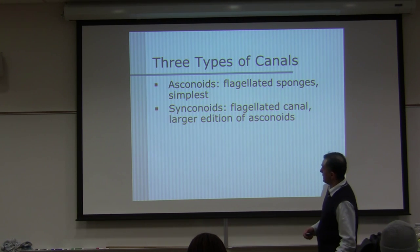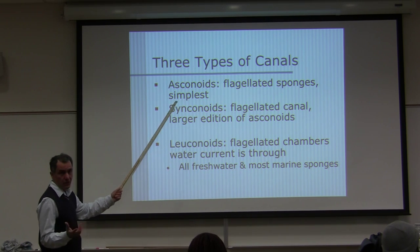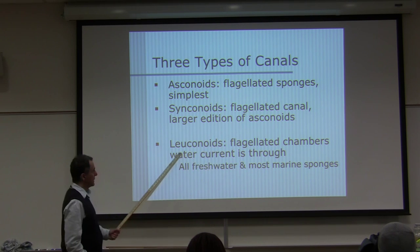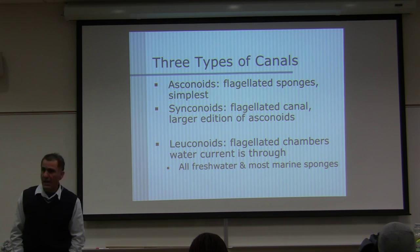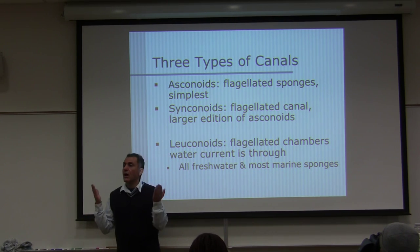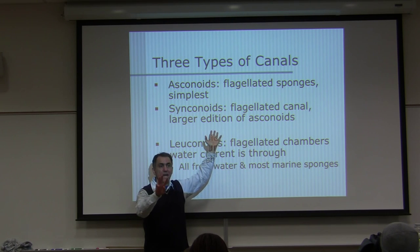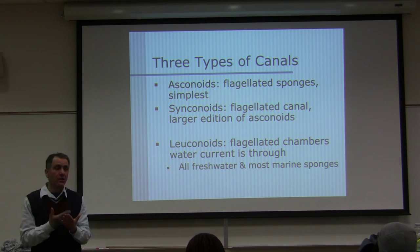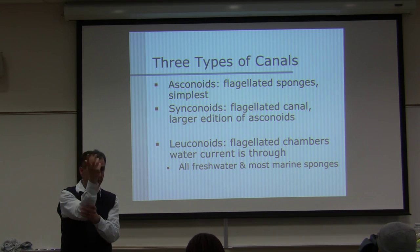There are three types of canals: asconoid, syconoid, and leuconoid. Asconoid is the simplest of the three. Syconoid has flagellated canals and is a larger addition to asconoid. Leuconoid has flagellated chambers and water currents — it is found in all freshwater and most marine sponges. Importantly, sponges are NOT classified based on canal type — all three or four classes can have all three different canal types.